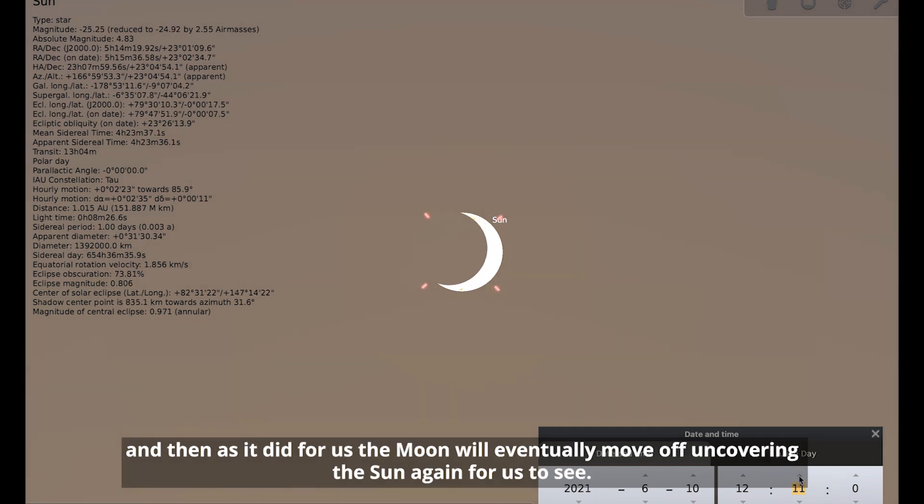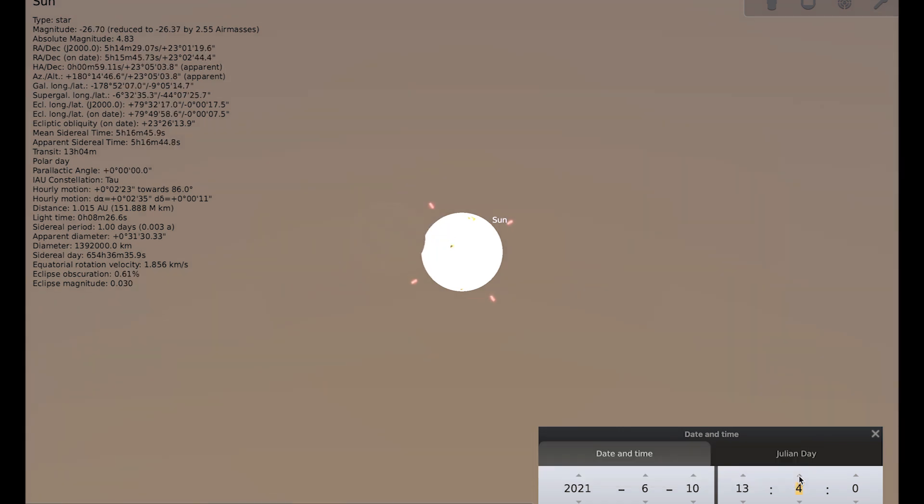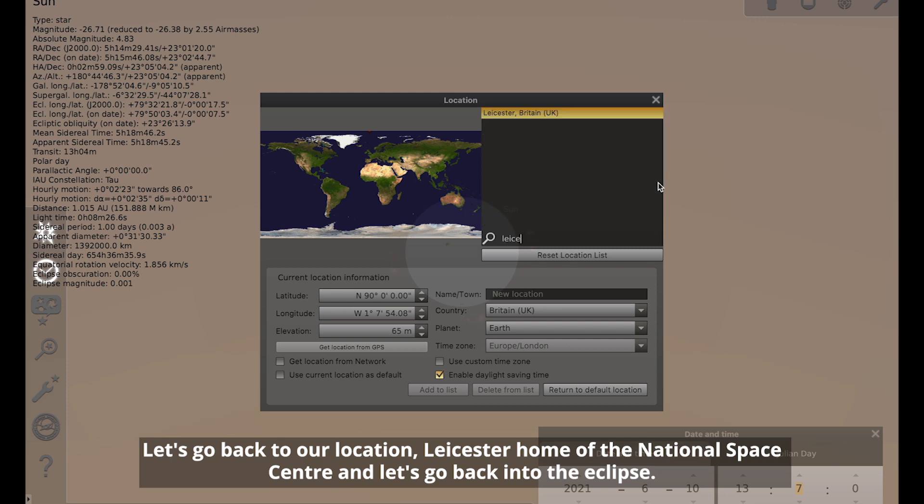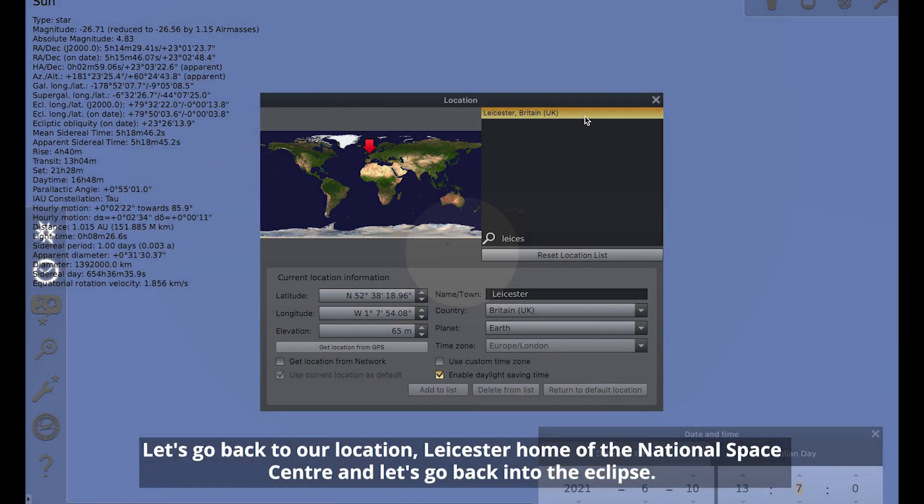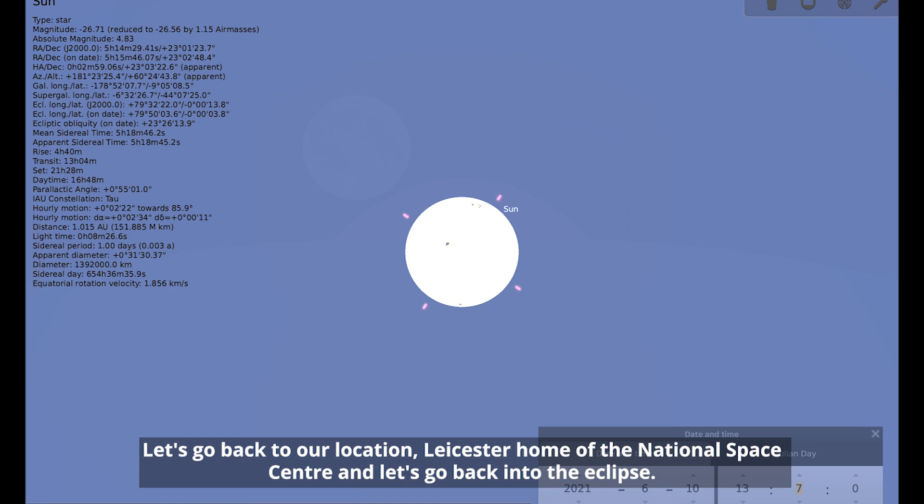If I go to the center point of the eclipse, you can see that the moon is covering the sun and we have this ring of fire effect around the outside known as an annular eclipse. And then, as it did for us, the moon will eventually move off, uncovering the sun again for us to see. So let's go back to our location, which is Leicester, home of the National Space Centre. And let's go back into the eclipse.